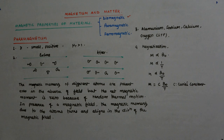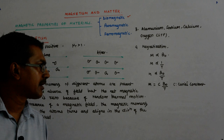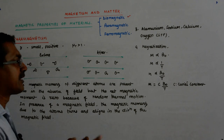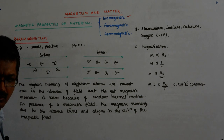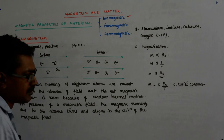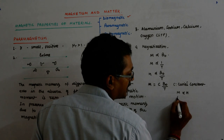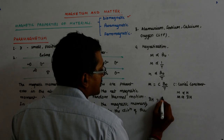How is M related to H? We had seen that M is directly proportional to H. When that proportionality constant came in, M was equal to chi H. We know that M is directly proportional to H, so the susceptibility chi came in. M equals chi H.